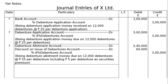Next entry — allotment due: Debenture Allotment Account debited — 12,000 debentures × ₹20 = ₹2,40,000. Discount on Issue of Debentures Account debited — issued at a discount of 5% of ₹100, that is ₹5 per debenture; redeemable at par. 12,000 × ₹5 = ₹60,000 in debenture discount. To 8% Debentures Account ₹3,00,000 (12,000 × ₹25). Narration: being debenture allotment money due on 12,000 debentures at ₹25 per debenture, including ₹5 per debenture as discount on issue.